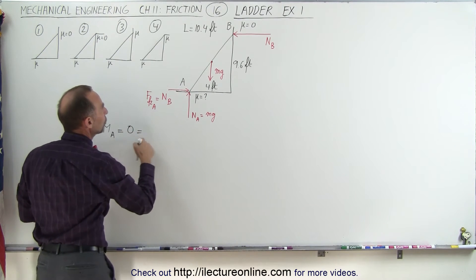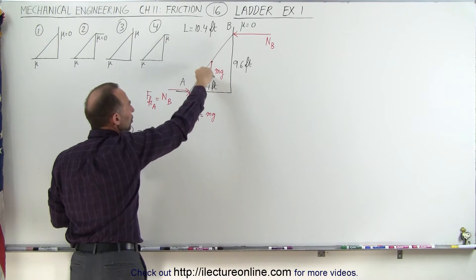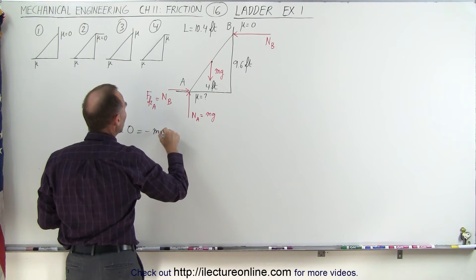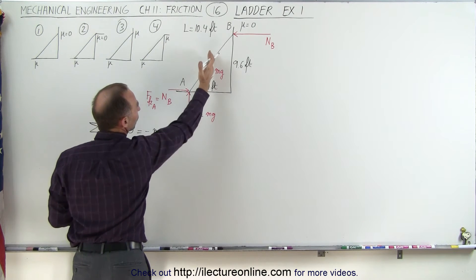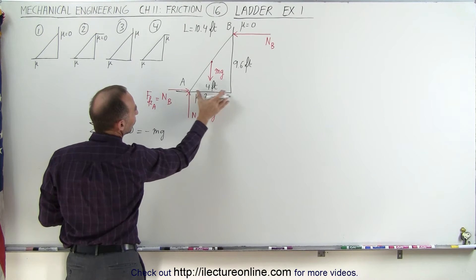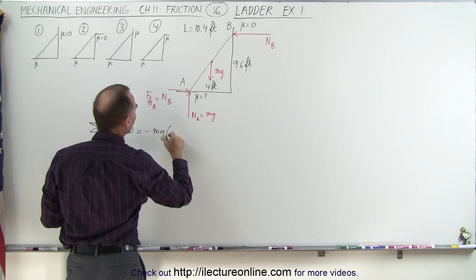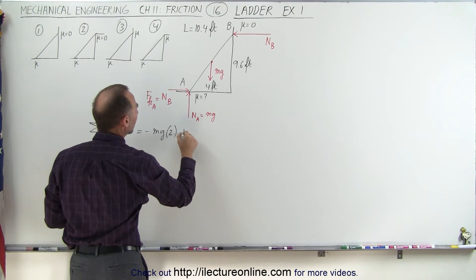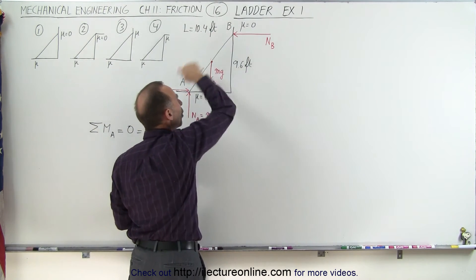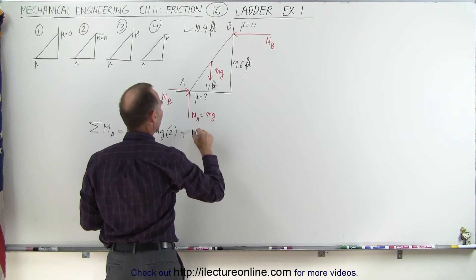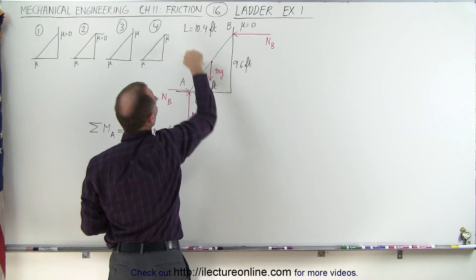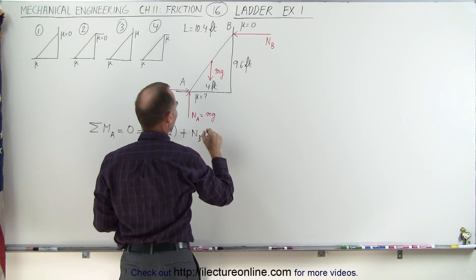And so this is equal to Mg. Now Mg causes a clockwise moment, which means a negative Mg times the perpendicular distance from the line of action of the force to the pivot point, which would be half the distance of four feet or two feet, so Mg times two. And then plus, because the normal at B causes a counterclockwise moment, so that's plus N sub B, and the perpendicular distance from the line of action of the force to the pivot point would be the 9.6 feet.